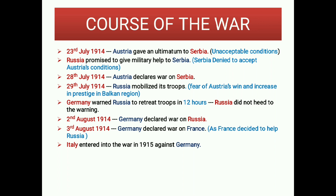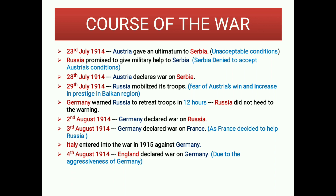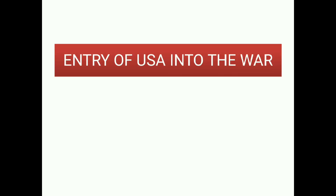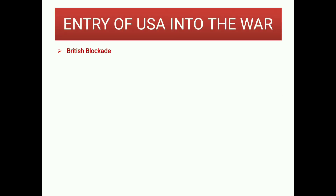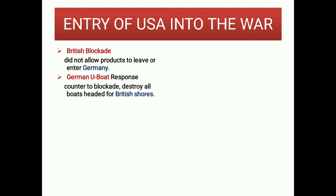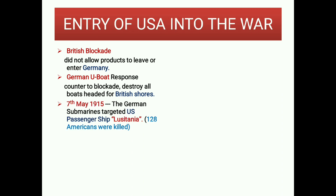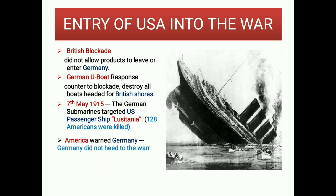On 3 August 1914, Germany declared war on France as France decided to help Russia. On 4 August 1914, England declared war on Germany due to Germany's aggressiveness. Italy entered the war in 1915 against Germany. A British blockade did not allow products to leave or enter Germany. In response, German U-boats destroyed all boats headed for British shores. On 7 May 1915, German submarines targeted the US passenger ship Lusitania, killing 128 Americans. America warned Germany but was ignored, so on 6 April 1917, the USA declared war on Germany.